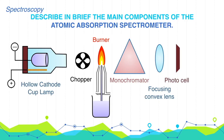5. Photomultiplier Tube. The transmitted light from the monochromator falls on the photomultiplier tube, producing a current. This current is proportional to the light incident on the photocathode of the photomultiplier tube.